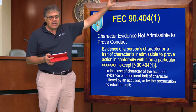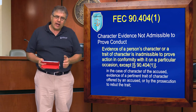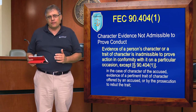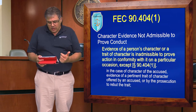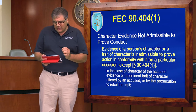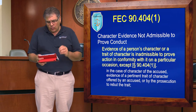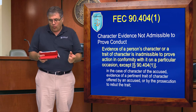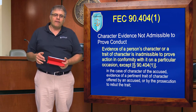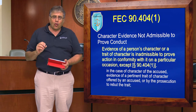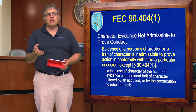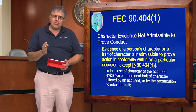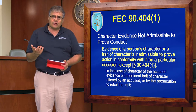Up here on the slide I've got FEC 90.4041 and it's the basic premise, just like in the Federal Rules, that character evidence is not admissible to prove conduct from a propensity perspective. Evidence of a person's character or a trait of character is inadmissible to prove action in conformity with it on a particular occasion except. Then we get into 4041 and 4042, which allow for the door to character to be opened—made legally relevant by a decision of the accused in the proceeding. The accused has the ability to make their character and the character of the victim relevant.